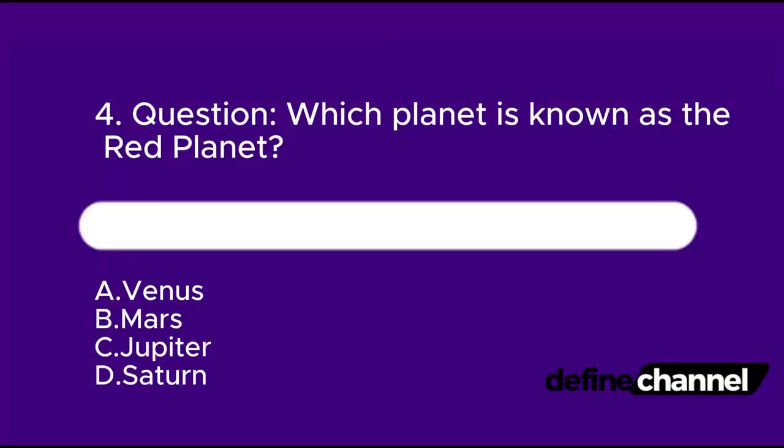Question 4. Which planet is known as the red planet? A. Venus. B. Mars. C. Jupiter. D. Saturn. Which is the correct answer?